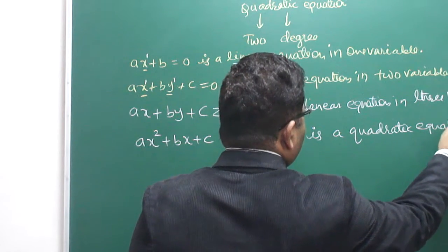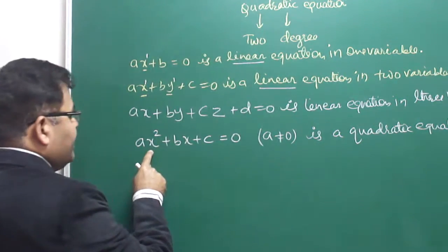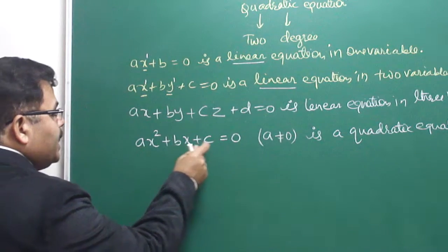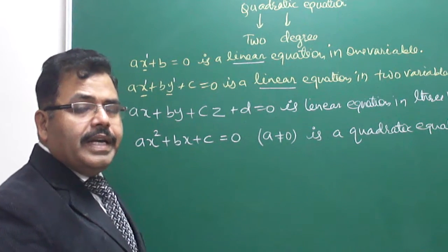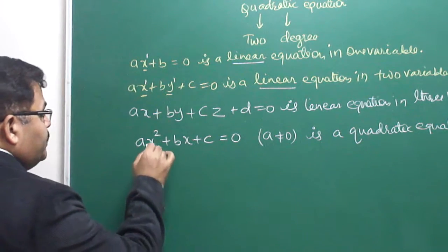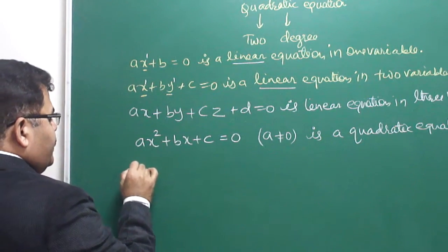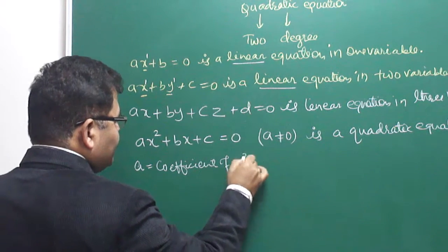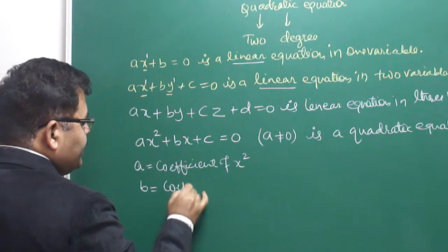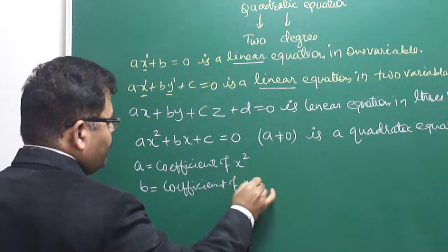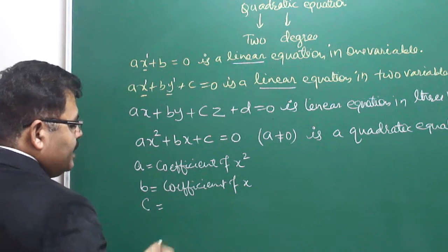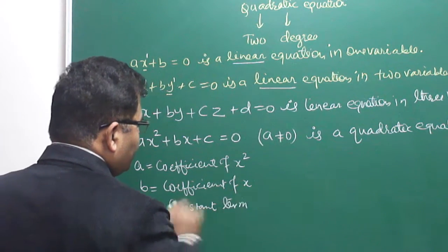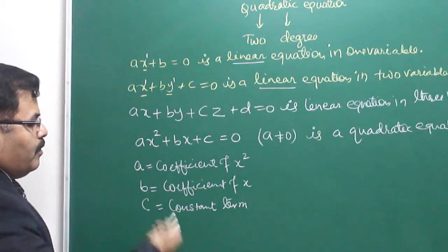The general form of a quadratic equation is ax² plus bx plus c equals 0, where a is not equal to 0. There is only one variable here, which is x. Here, a is recognized as the coefficient of x², b is the coefficient of x, and c is the constant term where there is no x.